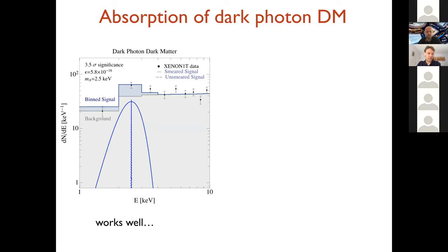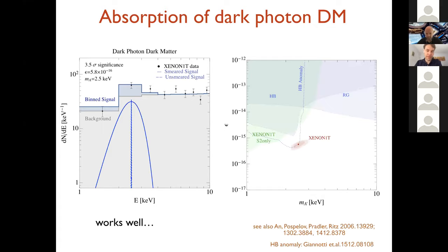So let's start with absorption of a dark photon. The idea is that the dark matter consists of very light dark photons, in this case of order 2.5 kV. On the left, you see that the signal, unsmeared signal, gets absorbed exactly at the mass, 2.5 kV, with a very small width. This gets smeared to this wide Gaussian here, which then can fit the excess pretty well. So the gray is the background model, the bin signal is in stinger blue, and you see that you can provide a reasonable fit of about 3.5 sigma.